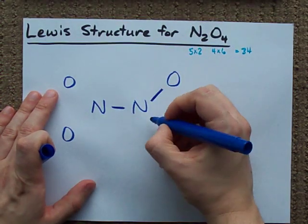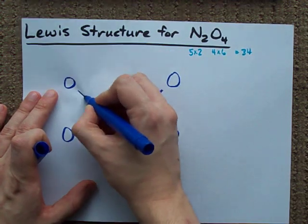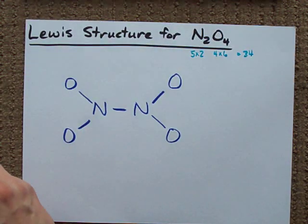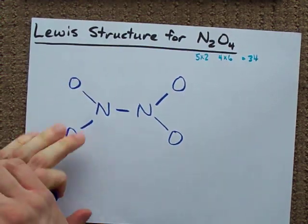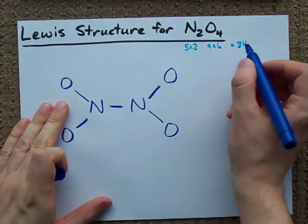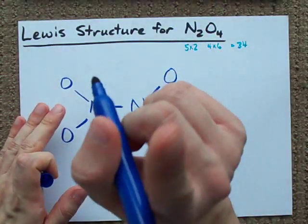2, 4, 6, 8, 10 electrons in bonds here. Step 2, fill your outer atoms with electrons. I need 34 electrons total, let's remember that.